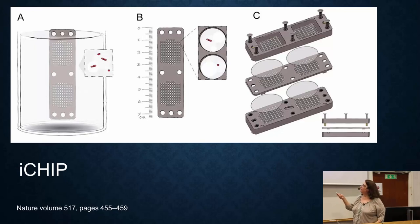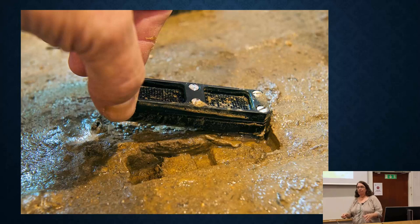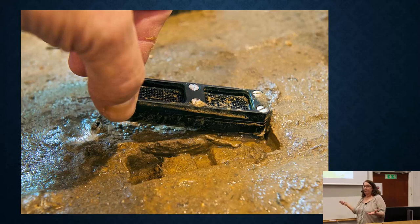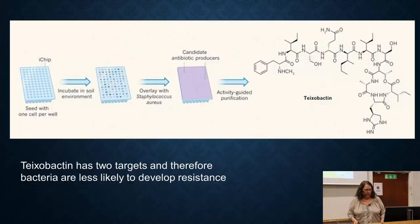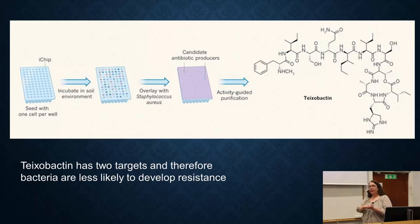You take a sample of bacteria from anywhere — the ocean, the soil — dilute it so that only one bacteria on average goes into each of the little holes, giving you many individual test tubes for each bacteria. You put filters — membranes that allow nutrients to go in and out but catch the bacteria — one on the bottom and one on the top, and screw the device together. Then you bury that i-chip in the right environment where those bacteria really grow, because whatever they need to grow is in the environment where you got them. You leave it for a month or a couple of weeks and let it grow.